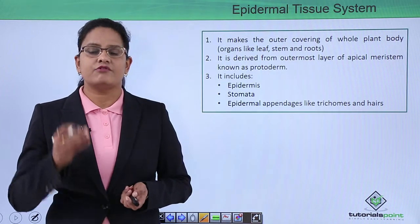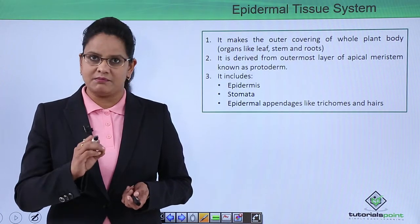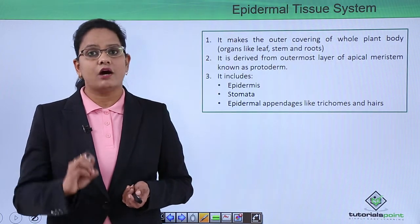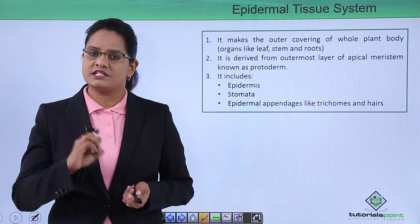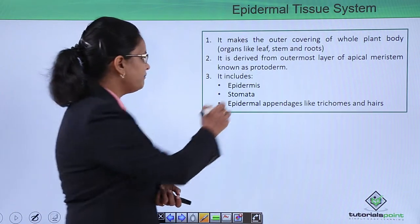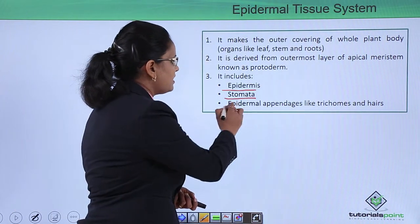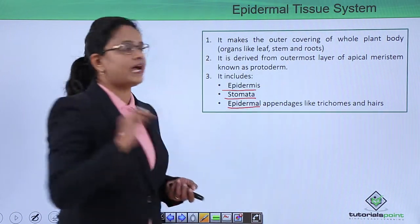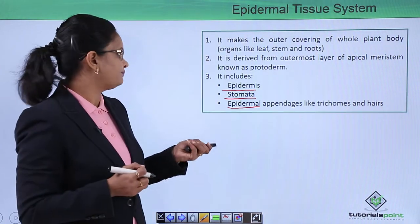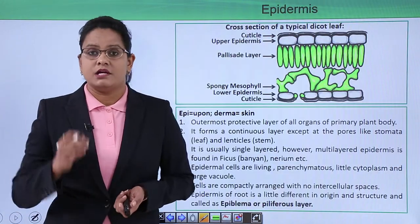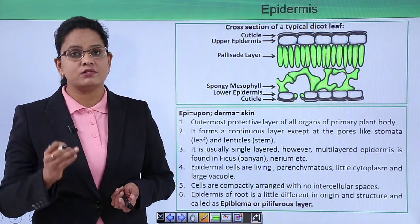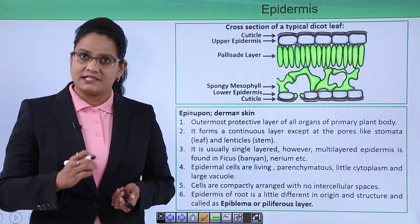As we learned in the previous video, the dermal tissue system is derived from the primary meristem protoderm of the apical meristem. This dermal tissue system is made up of three components: the epidermis, the stomata, and the epidermal appendages like trichomes and hair.